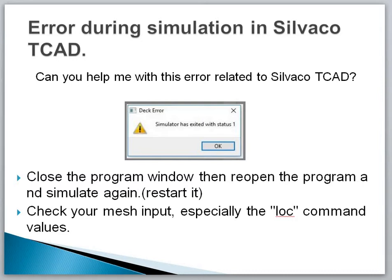If you did not find a solution with the first approach, you have to go for the second solution. Check out the mesh input, especially the location command value. You have to simply check the meshing. You must know where you have to take coarse meshing and where you have to take fine meshing. In the high field area and the junction area where the electric field is high, you have to take fine meshing, and in other areas you have to take coarse meshing.